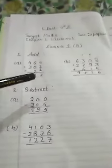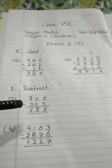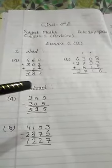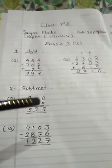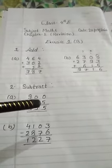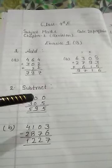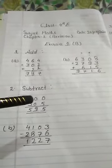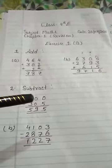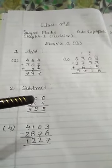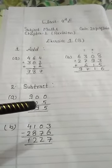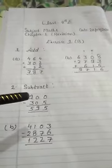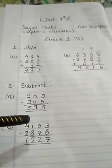Now question number 2 is subtract. Question A: 900 minus 305. Here is 0 and below is 5. 0 is smaller than 5, so you will take carry from the next number. Here is also 0, so you will take carry 1 from 9. It will become 10, and then 9 and 10. 10 minus 5 equals 5. 9 minus 0 equals 9. And 8 minus 3 equals 5.